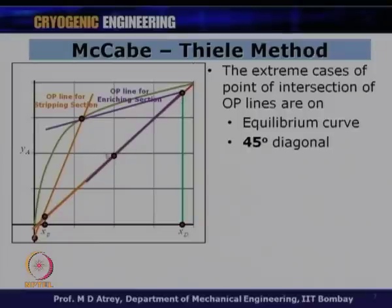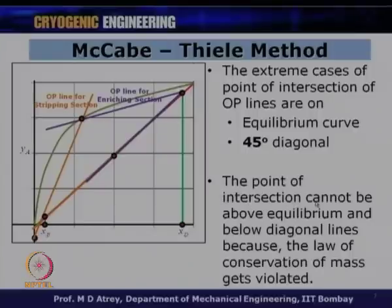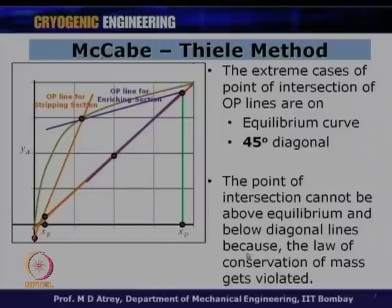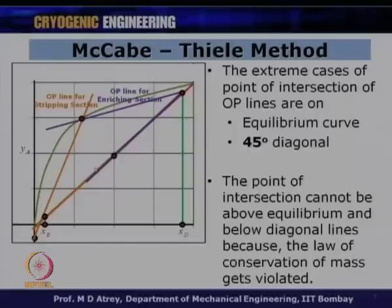When the operating lines intersect each other on the diagonal, the operating lines are right on the diagonal. In the other extreme case, the operating lines are very close to the equilibrium curve. In the case where lines are close to the equilibrium curve, the number of plates are going to be very large, while when the operating lines intersect on the diagonal, the number of plates are going to be minimum. The point of intersection cannot be above the equilibrium curve or below the y equals x diagonal, because the law of conservation of mass would be violated.